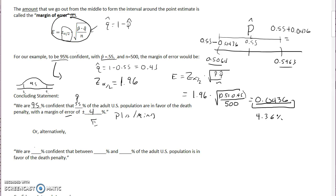Or another way we could say this is we are 95% confident that between blank and blank, this time they're going to want these percentages, the lower and the upper estimate of our interval. So rounding this to whole percentages, it would be between 51% and 60% of the U.S. adult population is in favor of the death penalty.